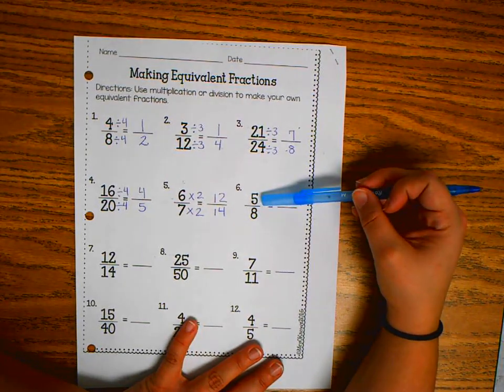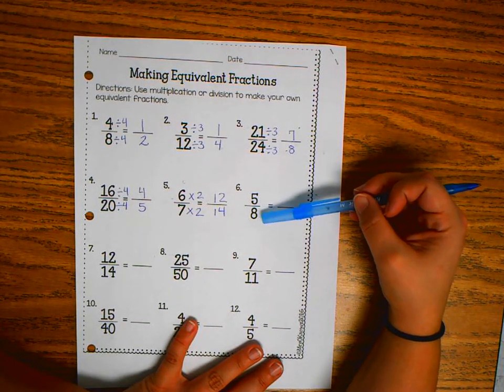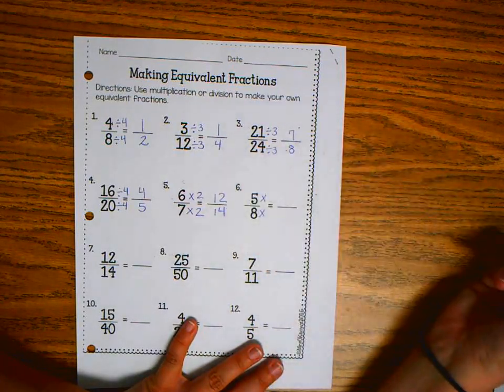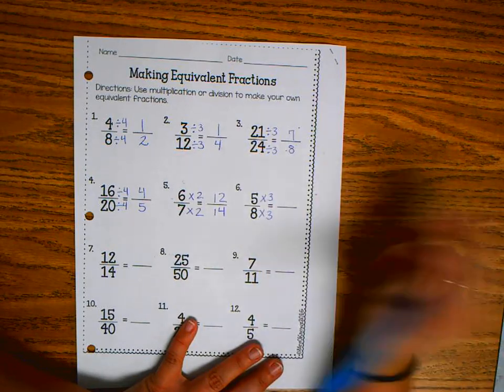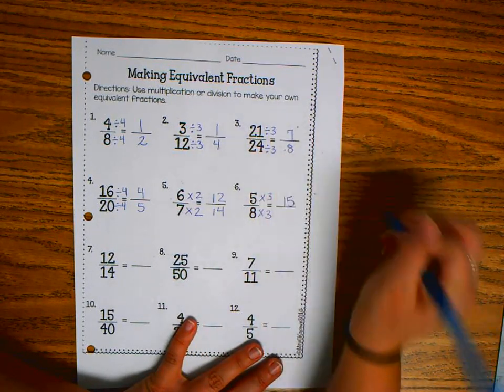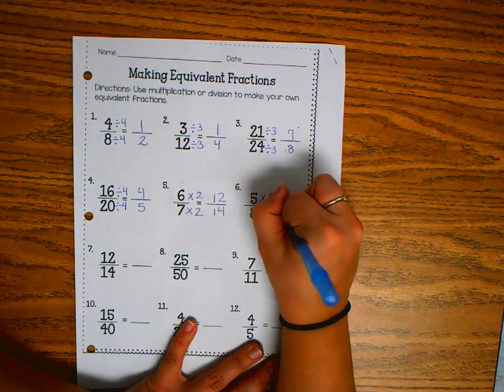If I look here, there's nothing that I can divide these numbers by that will be the same. So I'm going to go ahead and multiply those. And I'll multiply by 3. 5 times 3 is 15. 8 times 3 is 24.